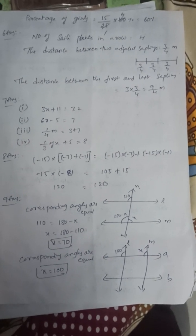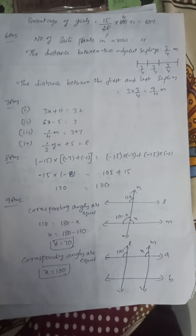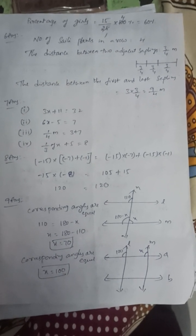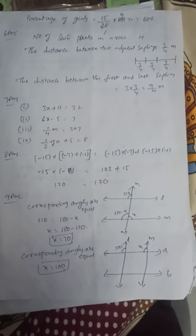That is 1/4 m equals 3 plus 7. Next, one-third of a number added to 5 equals 8. That is 1/3 of x plus 5 equals 8.